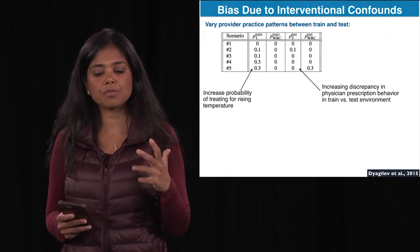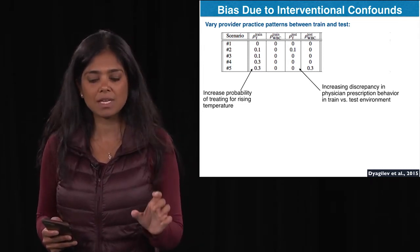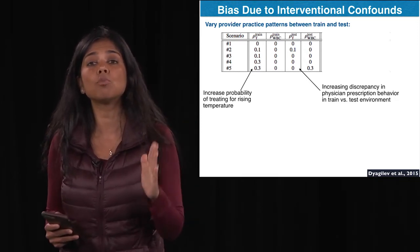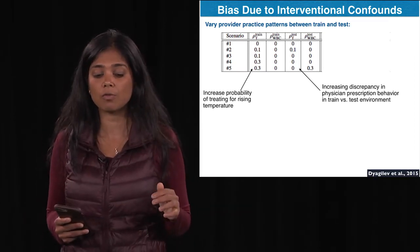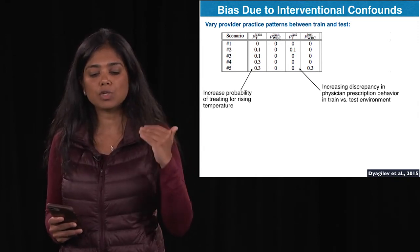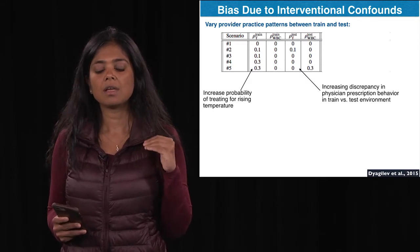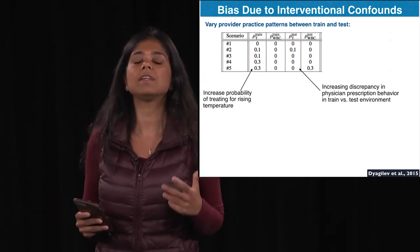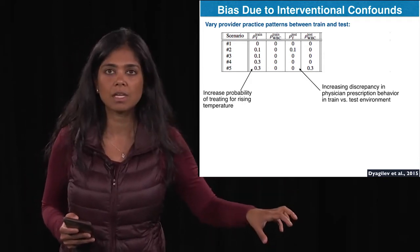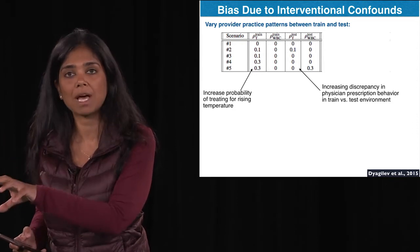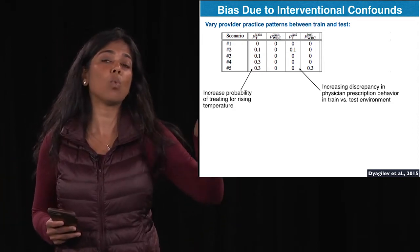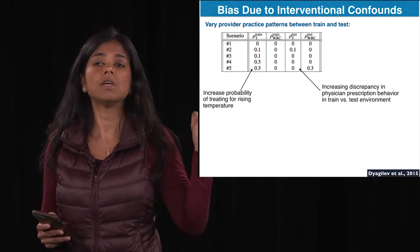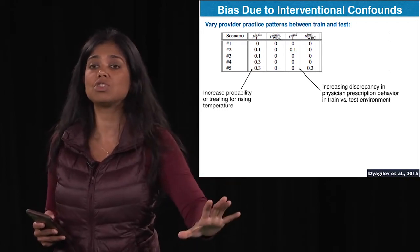As we go from top to bottom in the table, I'm generating scenarios with more drift from training to test — specifically, in scenarios four and five the training data has providers treating based on temperature, but in the test scenario providers treat based on WBC. This is effectively a version of developing a diagnostic device in one hospital and moving to a different hospital where providers have slightly different treatment patterns, or staying within a hospital where a different set of providers are treating differently.